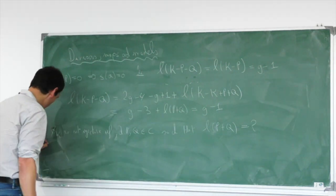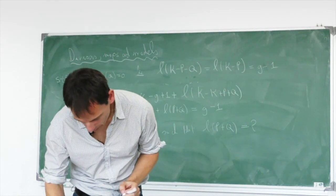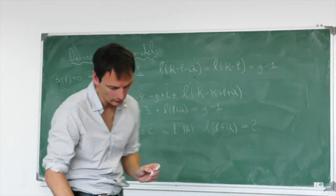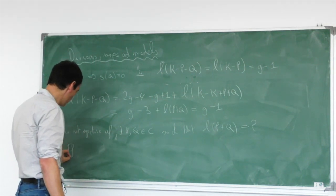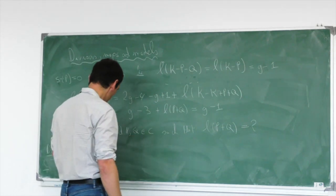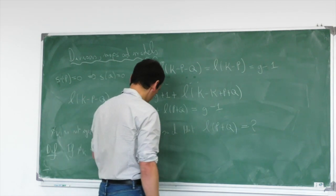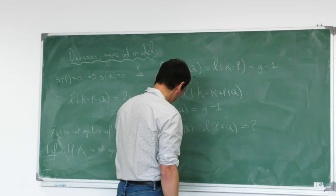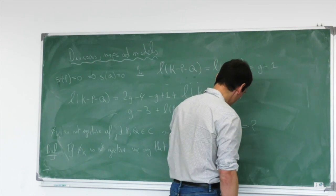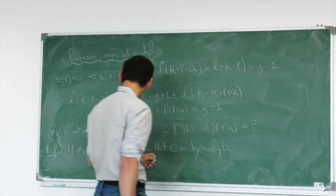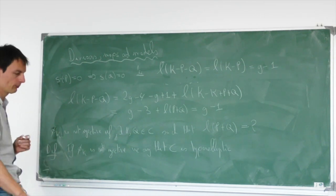The conclusion is that φ_κ is not injective if and only if there exist P, Q on the curve such that L(P + Q) = 2. This is so important that we give it a name: if φ_κ is not injective, we say that C is hyperelliptic. And when φ_κ is injective, we say that C is non-hyperelliptic.